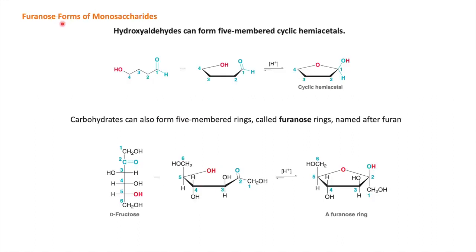Now we will study the furanose form of monosaccharides. This is a hydroxy aldehyde. When this hydroxyl group reacts on carbon 1, it gives a cyclic hemiacetal form. This is a five-membered ring containing oxygen. This five-membered ring containing oxygen is called a furan ring, and from furan the name furanose comes. Taking the example of D-fructose: D-fructose has its carbonyl at the second position. If the hydroxyl group at the fifth position reacts on carbon 2, it gives a five-membered furanose ring.